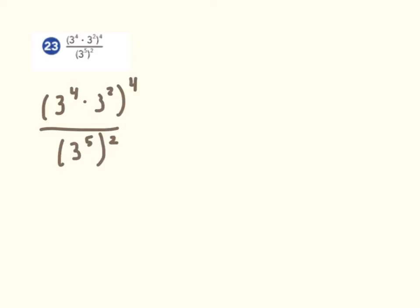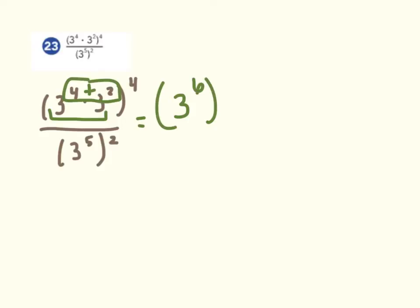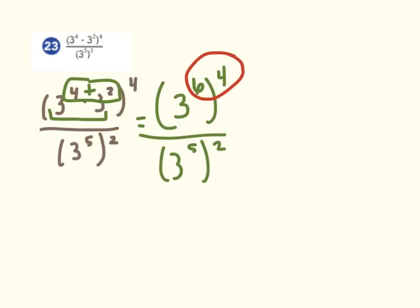For number 23, let's start in the numerator. I see we have the same bases and we're multiplying, so we can use the product rule — keep the base, add the exponents. Now I'm just going to bring over to the 4th power. In the numerator I see the power rule, so we keep the base and multiply the exponents: 6 times 4 is 24.